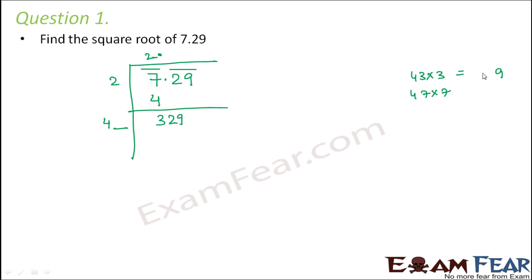So now you can just try 3 and 7 in the gaps. If you put 3 then it becomes 129. If you put 7 then it becomes 329. So this is the right option for us. So we will put 7 here. This becomes 329. Therefore, the square root of 7.29 is equal to 2.7.